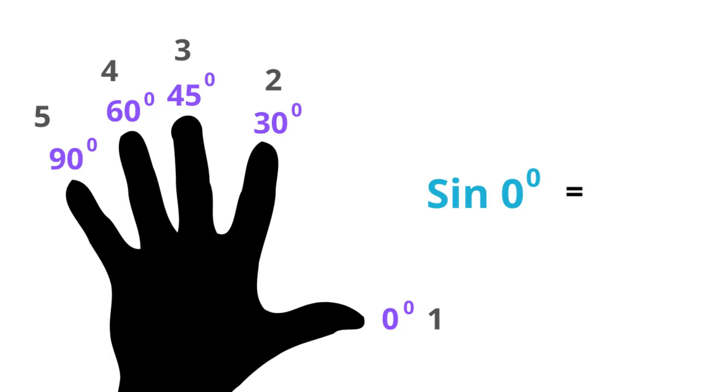Now let's find sine of 0 degrees. So this is the finger. Since this is sine we count the fingers to the right. But there is none. So 0 divided by 2 is 0.